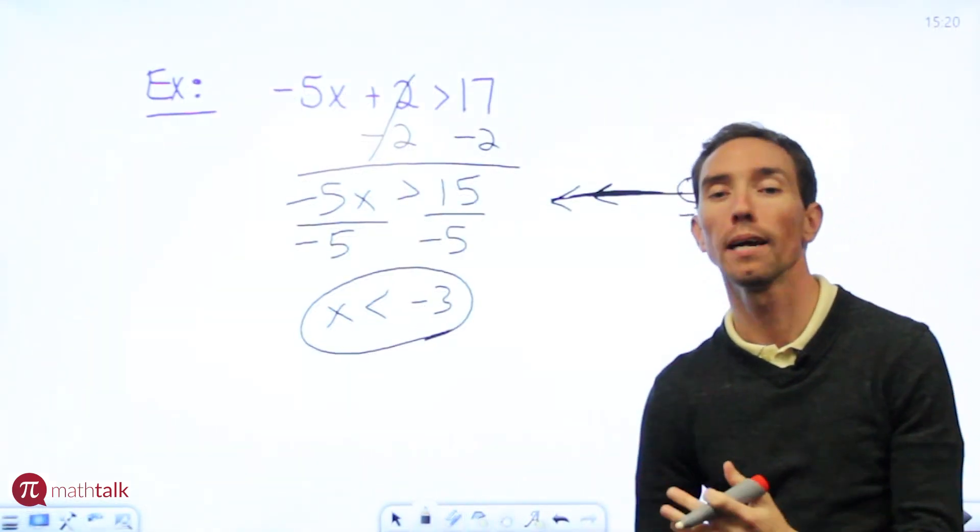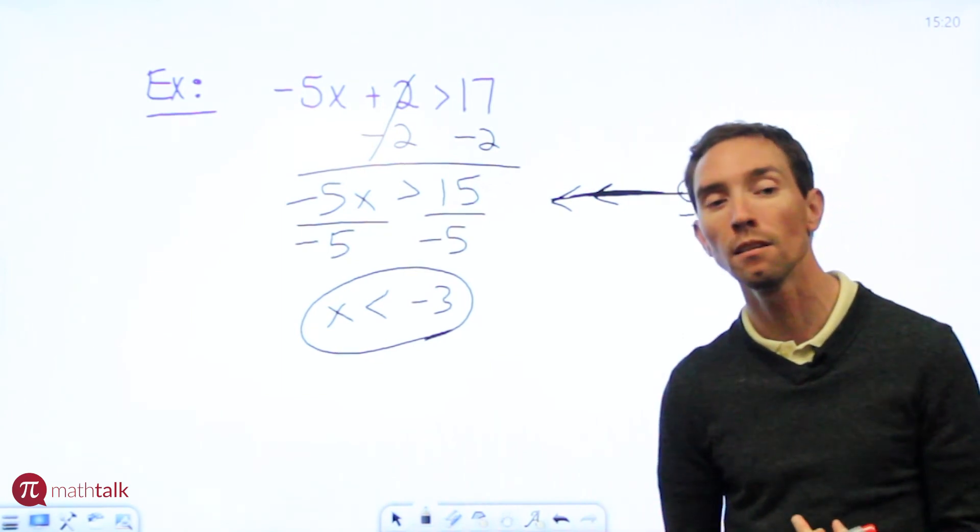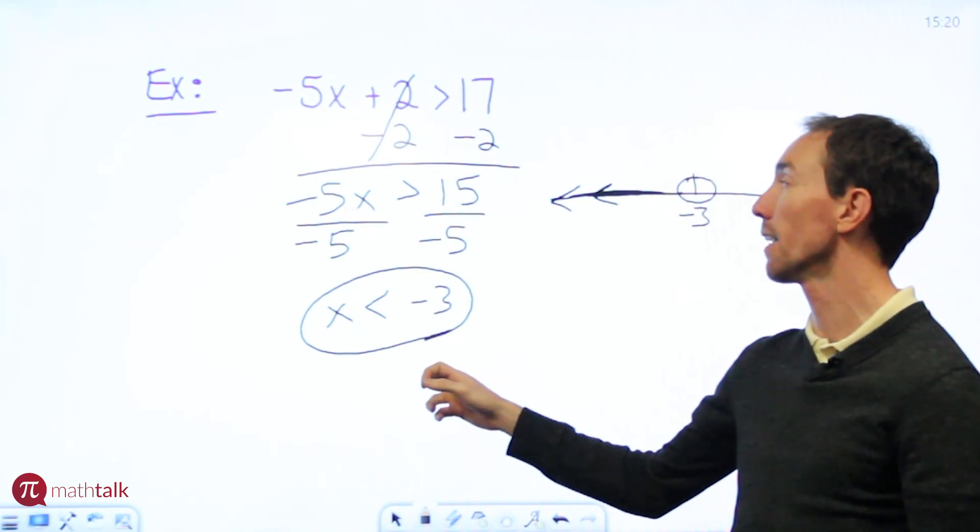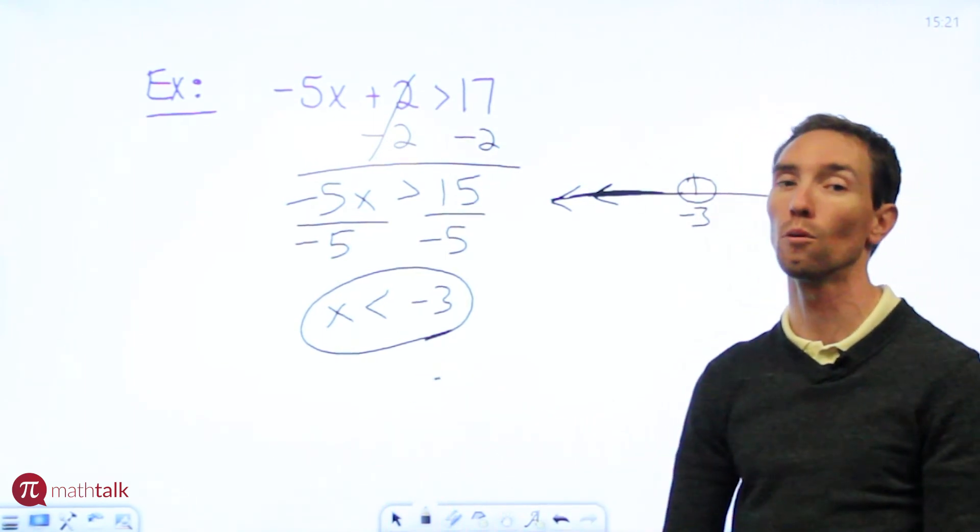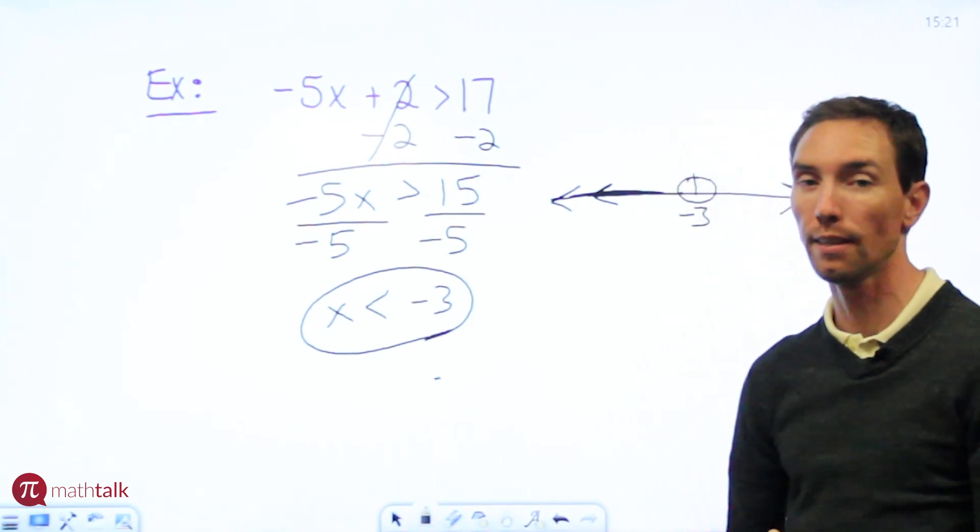So when you get to these examples I hope this helps you a little bit. Again you want to really treat it just like an equation. Use opposite operations and remember if your last step is dividing or multiplying by a negative number you have to switch the direction of the symbol. So I hope this helps. Make sure you check out the other videos in this series. Thanks.